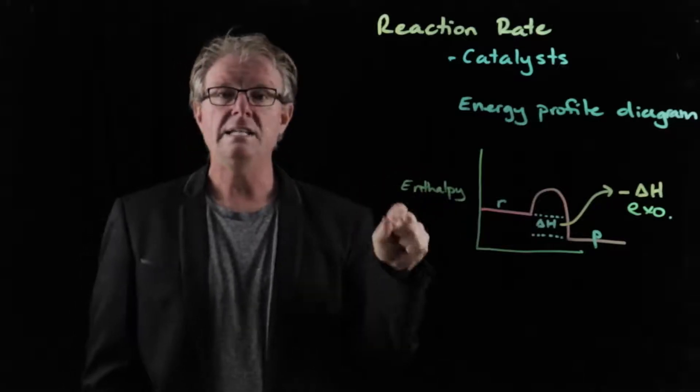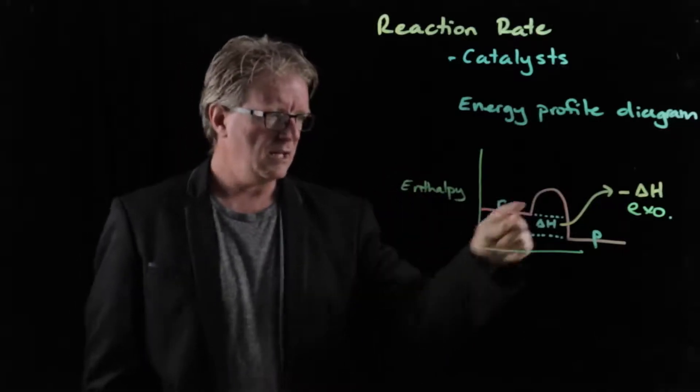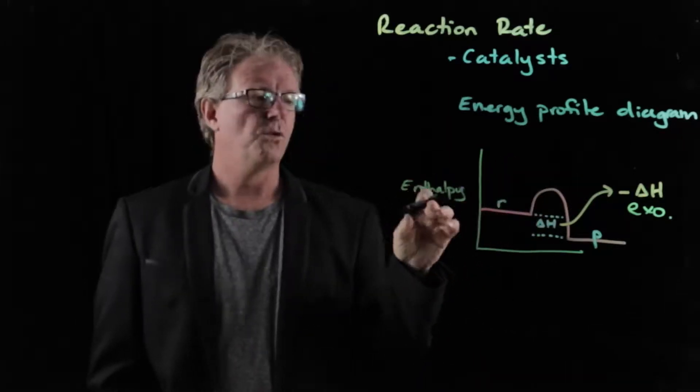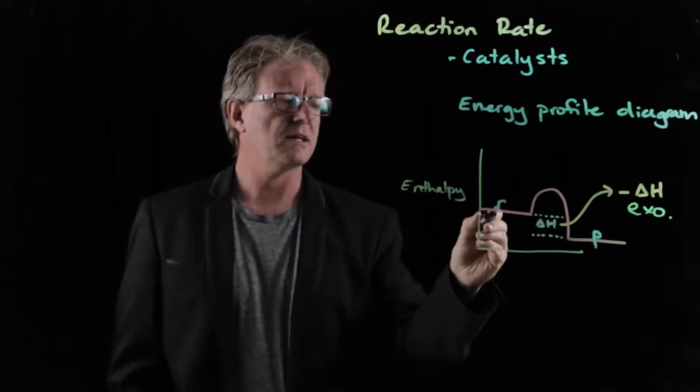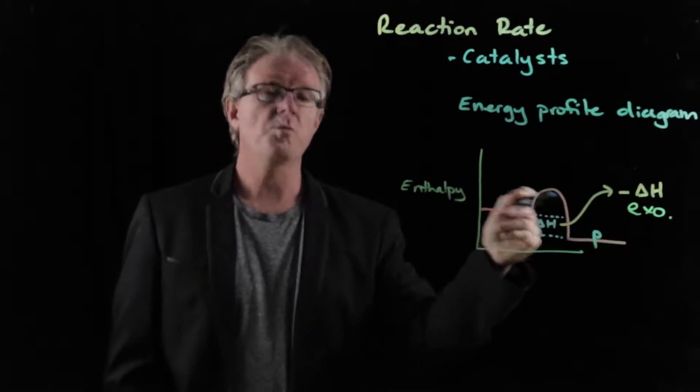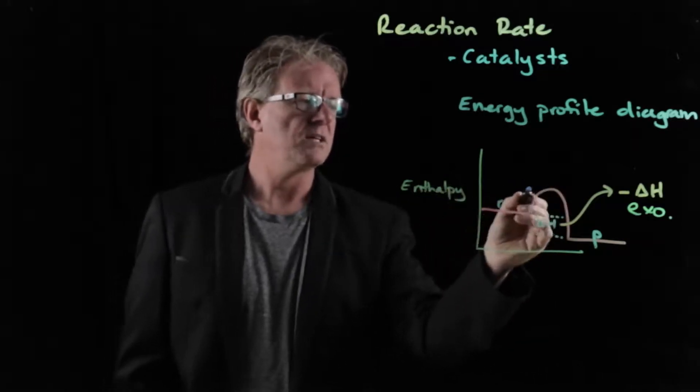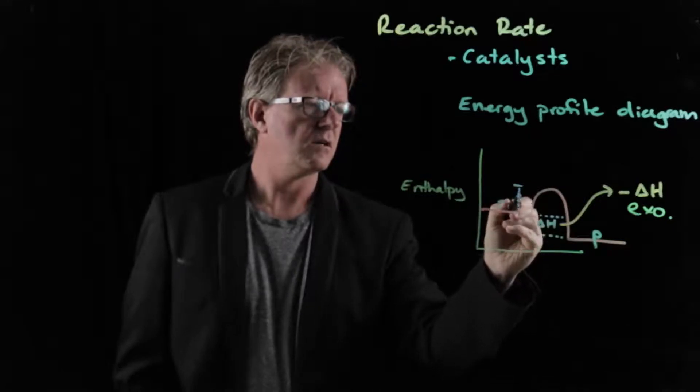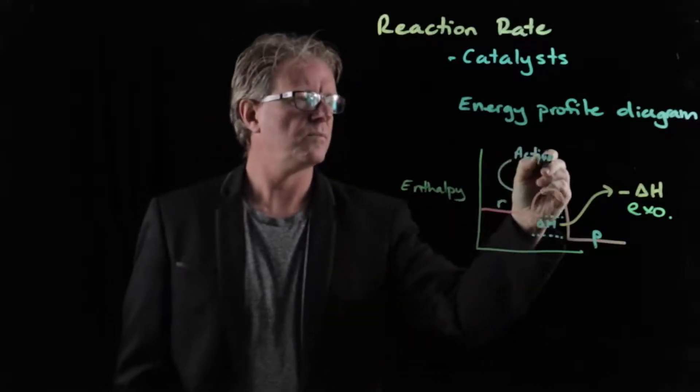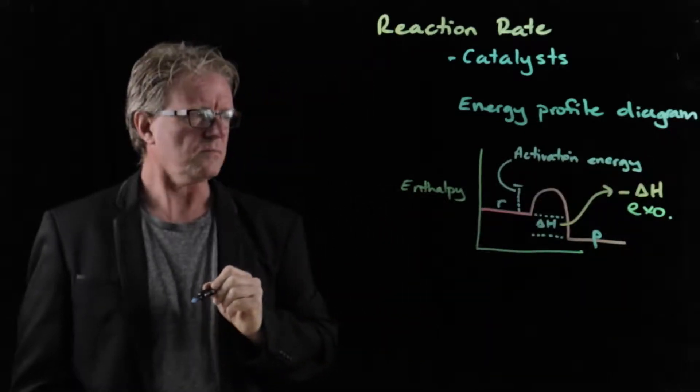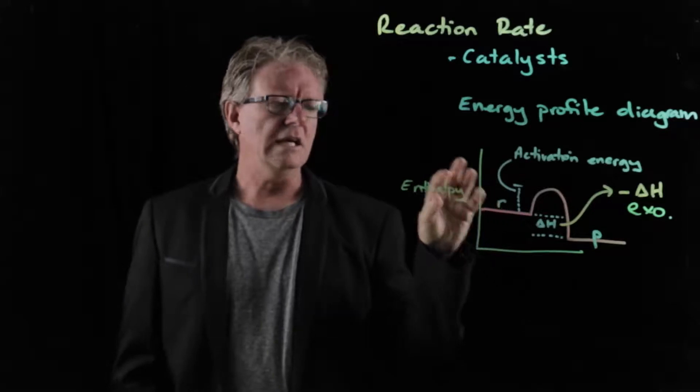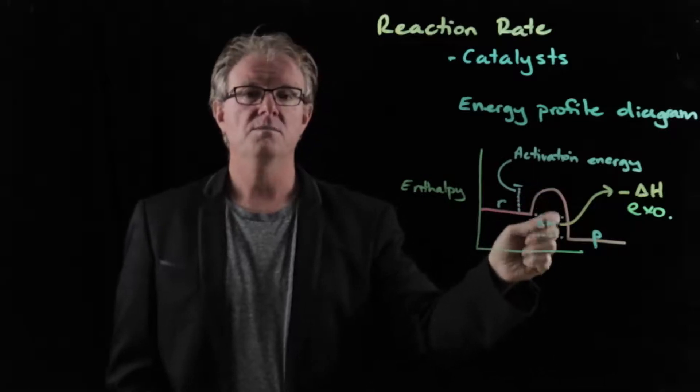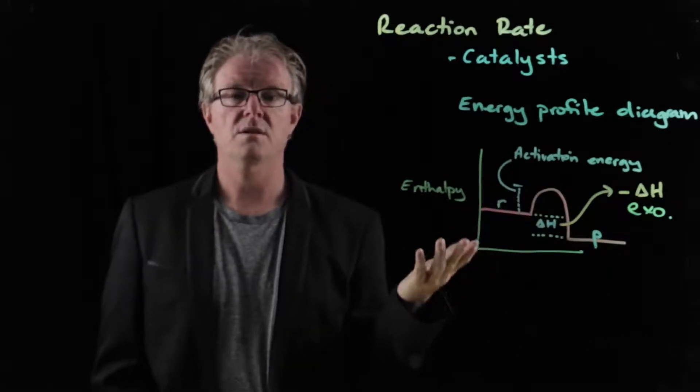Now this little bump here, this little bump is the energy required for the reaction to occur. So before the reactants can have their bonds broken to form the products, they have to have enough kinetic energy to get over this value here. So this value here is the activation energy. And if the reactants do not have enough kinetic energy to get up over this hill, then they'll just fall back down to the reactants. So in other words, there'll be no reaction.